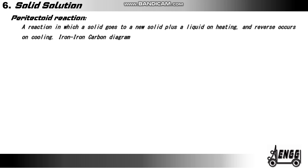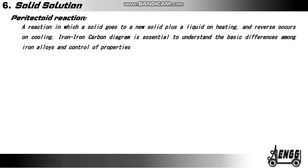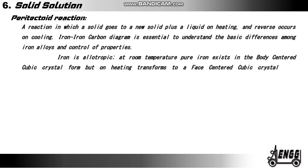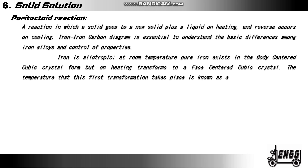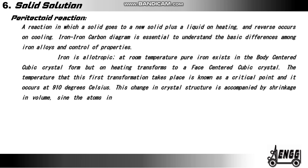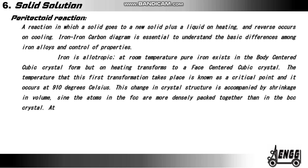The iron-carbon diagram is essential to understand the basic differences among iron alloys. Iron is allotropic. At room temperature, pure iron exists in the body centered cubic (BCC) crystal form. On heating it transforms to a face centered cubic (FCC) crystal. The temperature at which this first transformation takes place is known as the critical point and it occurs at 910 degrees Celsius. This change in crystalline structure is accompanied by shrinkage in volume since the atoms in the FCC are more densely packed together than in the BCC crystal.